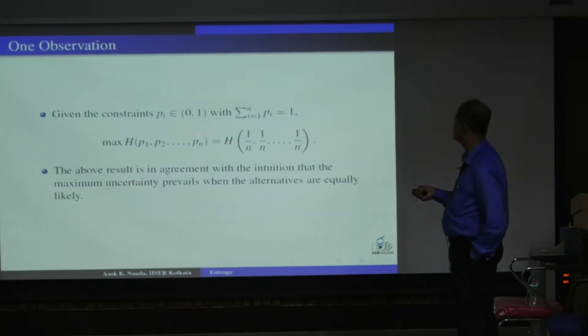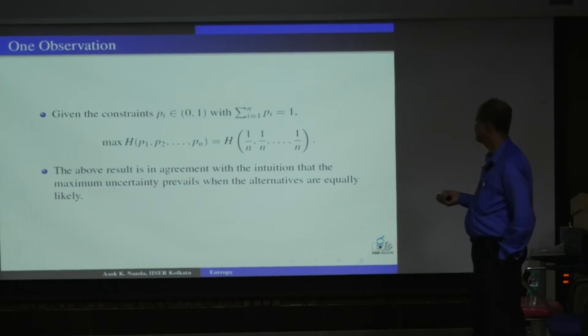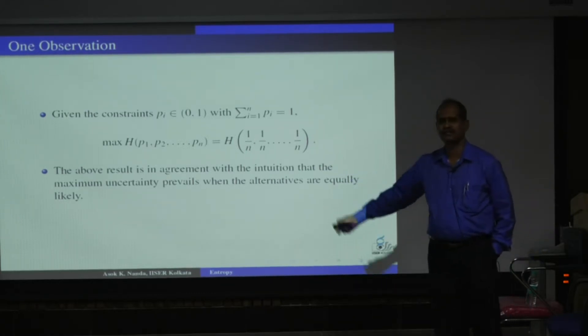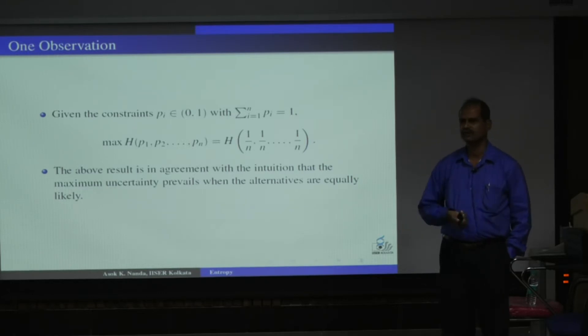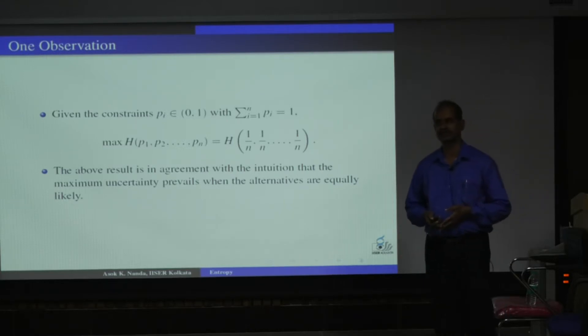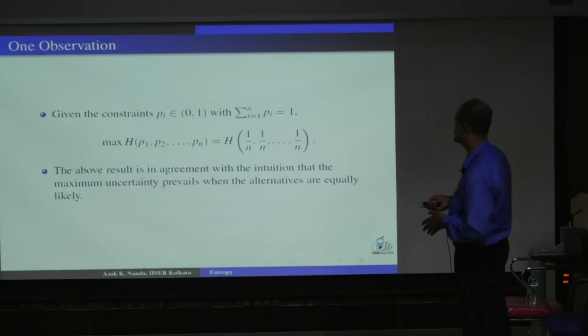Obviously, this maximum of H(p1, p2, ..., pn) will be at 1 by n. This is just a simple entropy function, you just maximize it over the restriction that each pi is greater than or equal to 0 and sigma pi is 1. Under this restriction, you will get a maximum of HP at this point, which is quite natural, because if you have uniform distribution, then eventually you have the maximum entropy. Most uncertain situation.